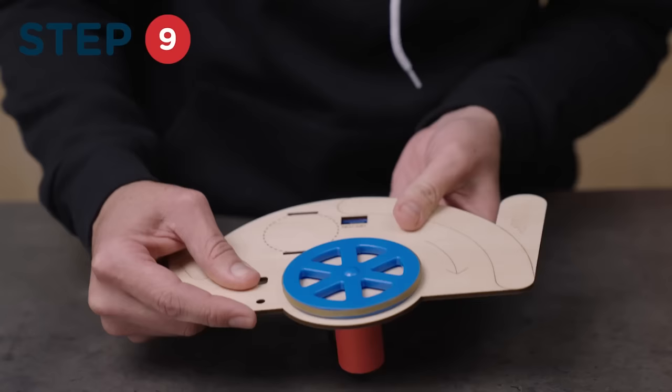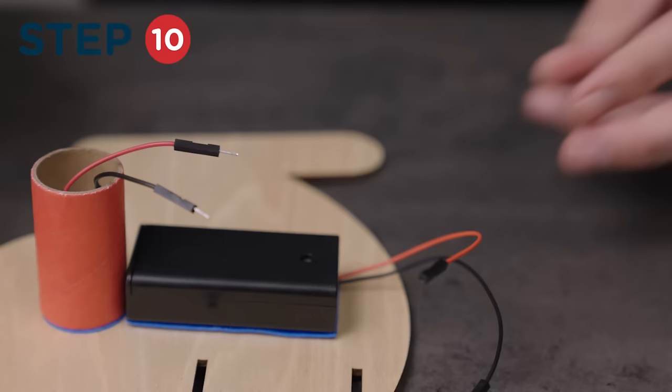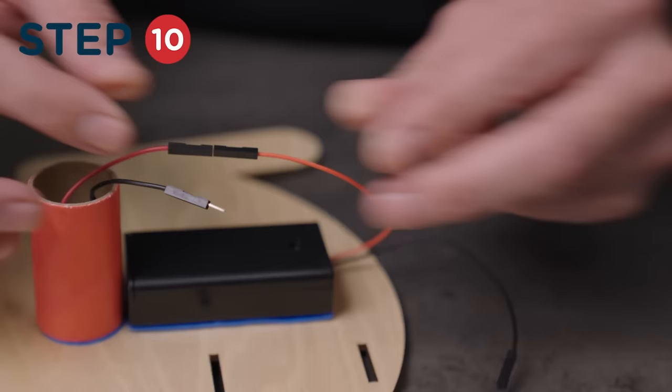Then, flip the launcher back over and connect the wires of the battery pack to the wires on the DC motor. Make sure you connect the red wire to the red wire and the black wire to the black wire.